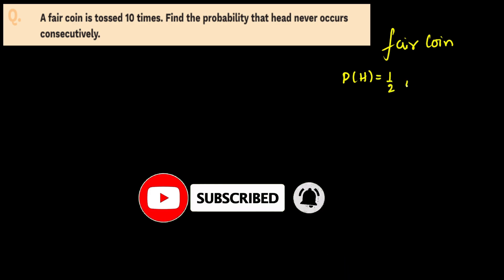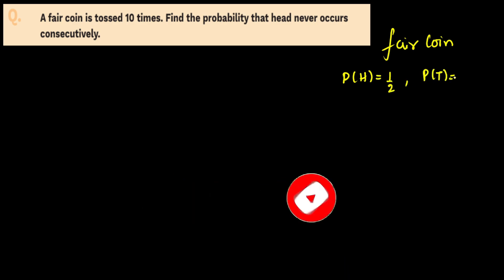Since it's a fair coin, the probability of getting heads is 1/2 and the probability of getting tails is also 1/2. Now the problem is you cannot directly calculate this because there are 10 coins tossed. These are 10 independent events — the probability of the next coin does not affect the probability of the previous coin. So these are independent binomial trials. You cannot directly calculate because it's for 10 coins, so you have to make cases.